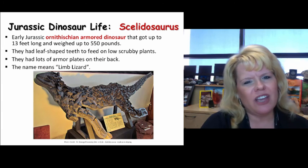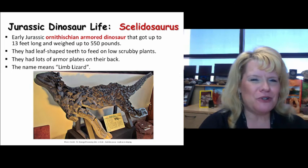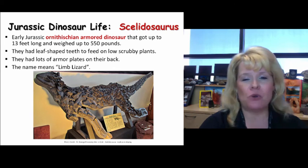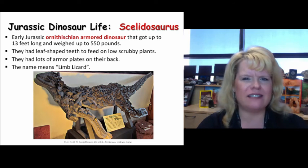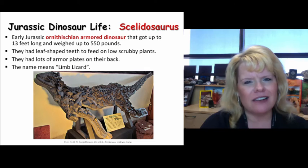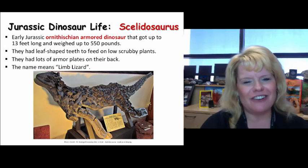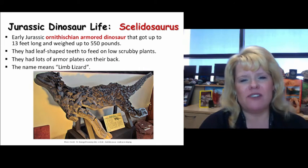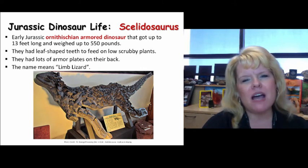Scutellosaurus is an Ornithischian dinosaur that got up to about 13 feet long and up to about 550 pounds. He's an armored dinosaur — like an Ankylosaurs but from a different time period. He was an early Jurassic dinosaur from the Ornithischian lineage with leaf-shaped teeth, so he ate shrubby-type plants. Very armored — if attacked, the predator has to be able to turn them over to get a kill. This dinosaur's name means limb lizard.